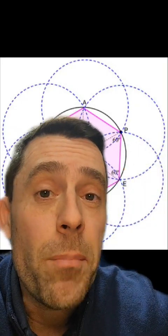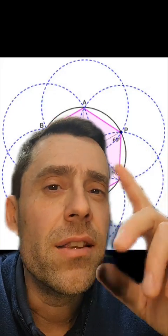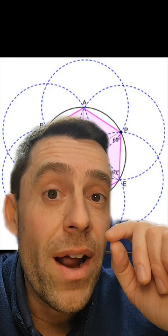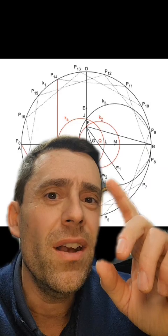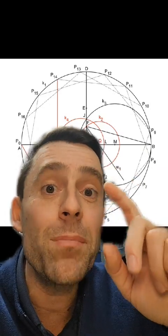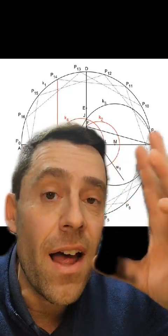But what about a heptagon? A polygon with seven sides? Nobody could find that construction until Gauss came around. And Gauss did not find a construction for the heptagon. He found a construction for the heptadecagon, a polygon with 17 sides. And he proved something else.